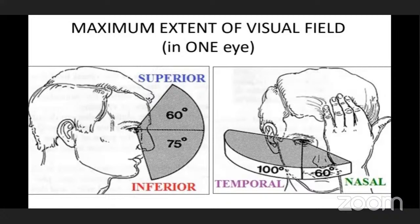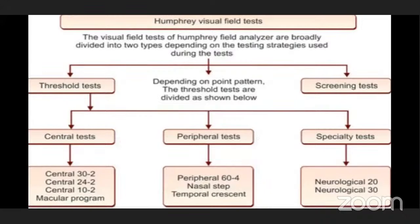Humphrey visual field tests are broadly divided into two types depending on testing strategies: threshold test and screening test. Depending on point pattern, threshold tests are divided into three types: central test, peripheral test, and specialty test.